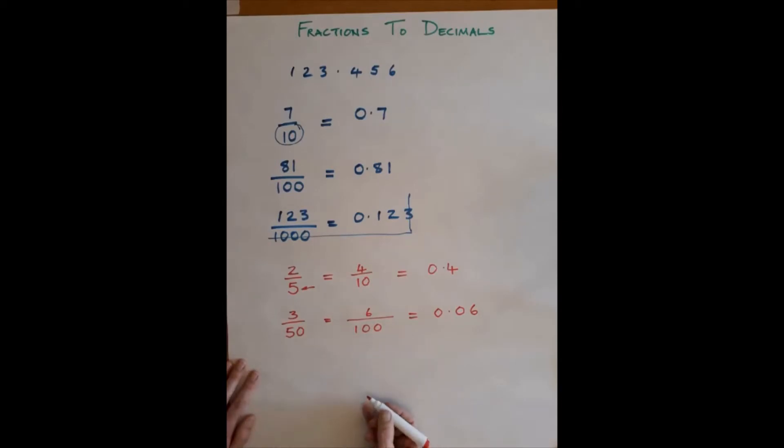And we could carry on. Let's pick a very slightly different one: 7 over 250. Again, this isn't falling into 10, 100, 1000, but 4 two-hundred-and-fifties makes 1000. So if we multiply the top by 4 and the bottom by 4, we have 28 over 1000. And the smallest digit here, the one that is furthest to the right, will go in the thousandth column.